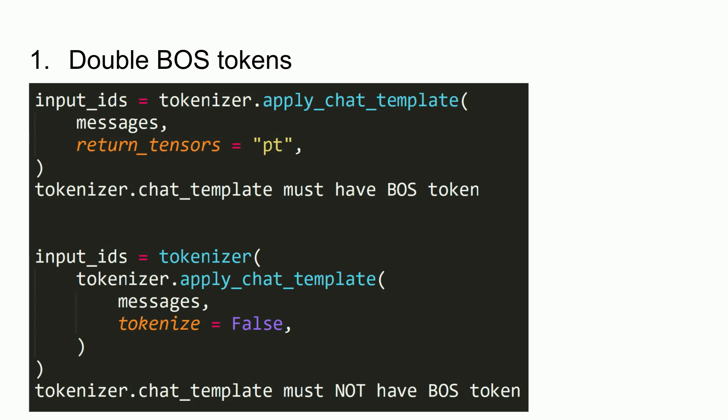A simple way to check for double BOS tokens: if you use HuggingFace's apply_chat_template, your chat template must include a BOS token — otherwise it won't add one. Llama 3 does require a BOS token. If you do the second approach, you're actually adding two BOS tokens. So please do not add a BOS token separately when using the chat template.